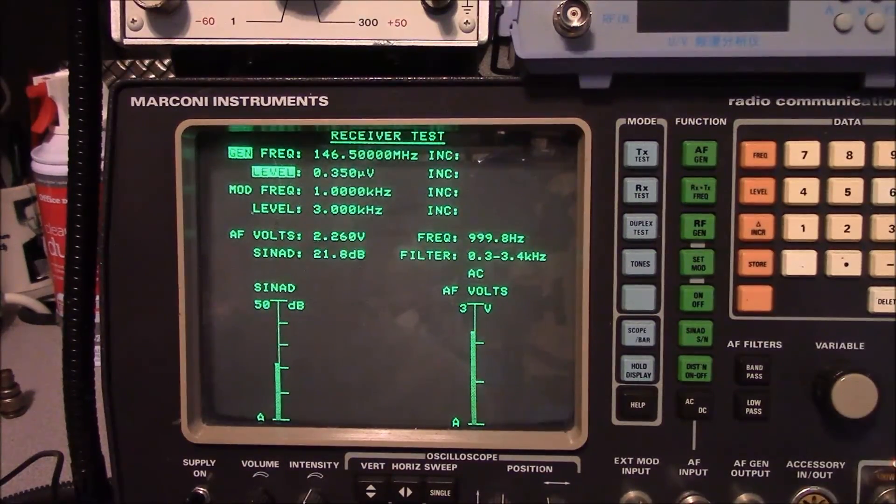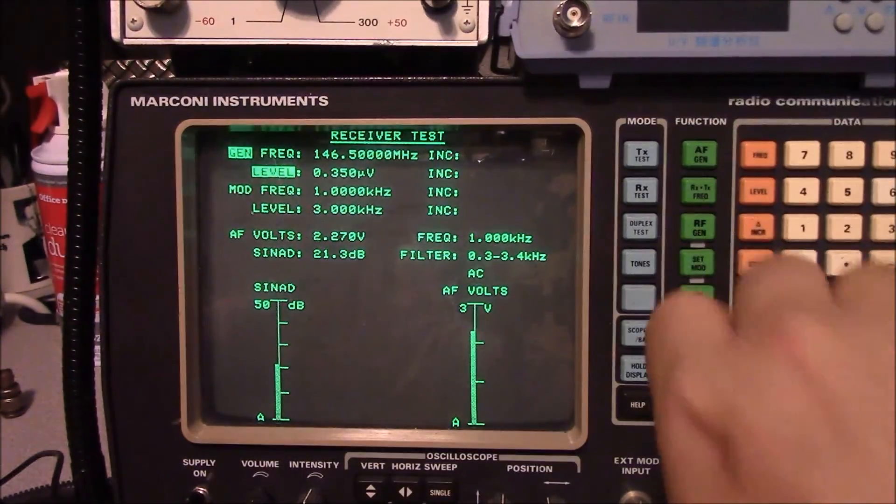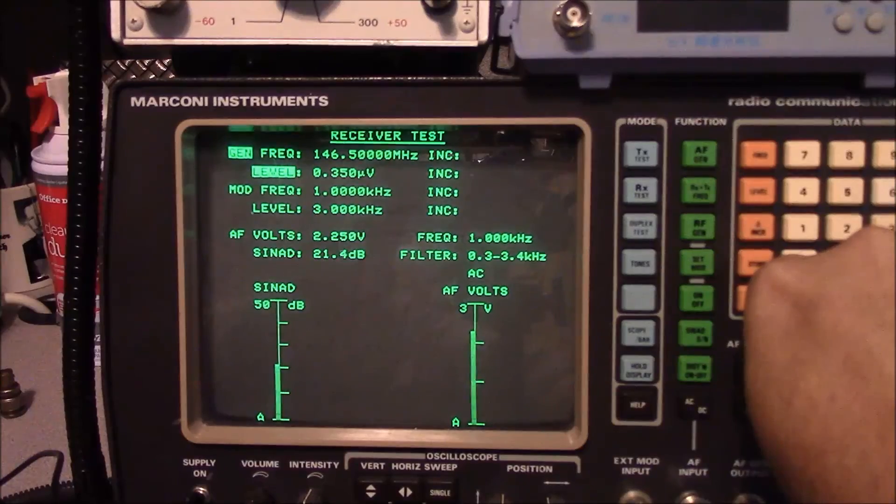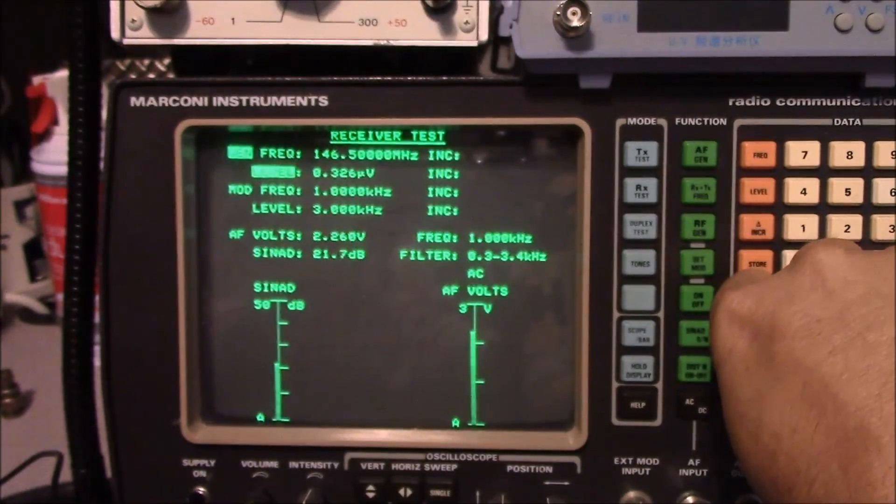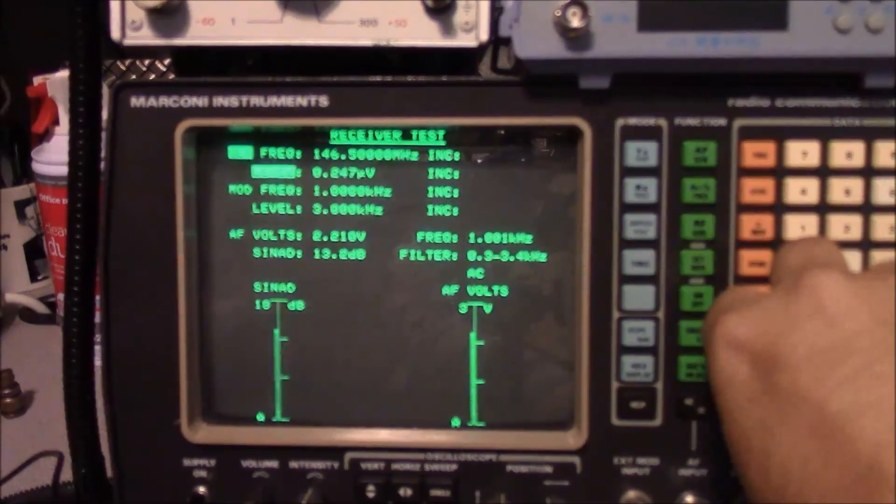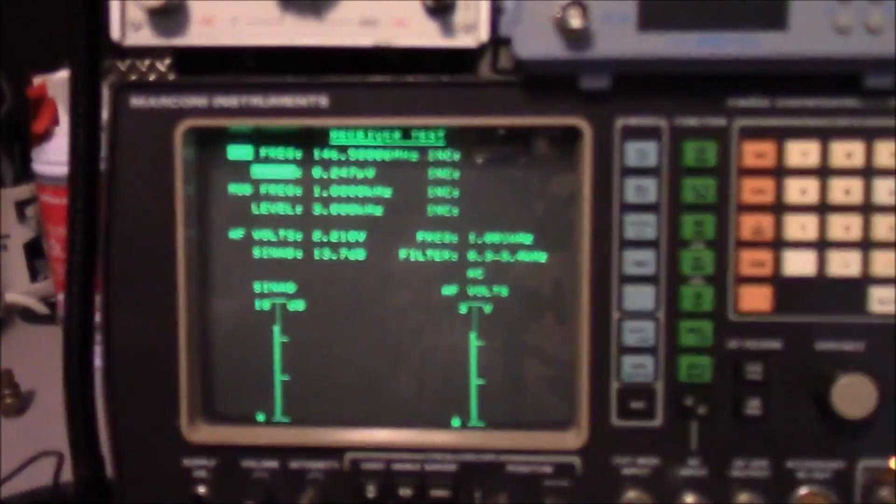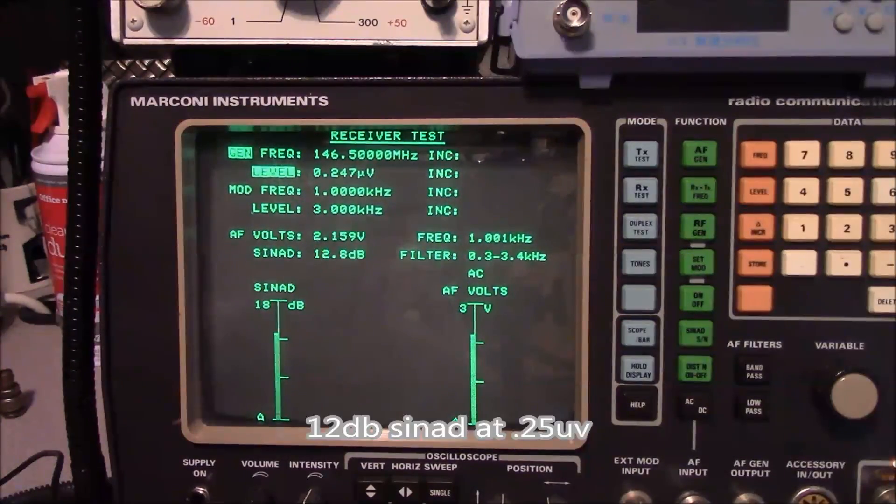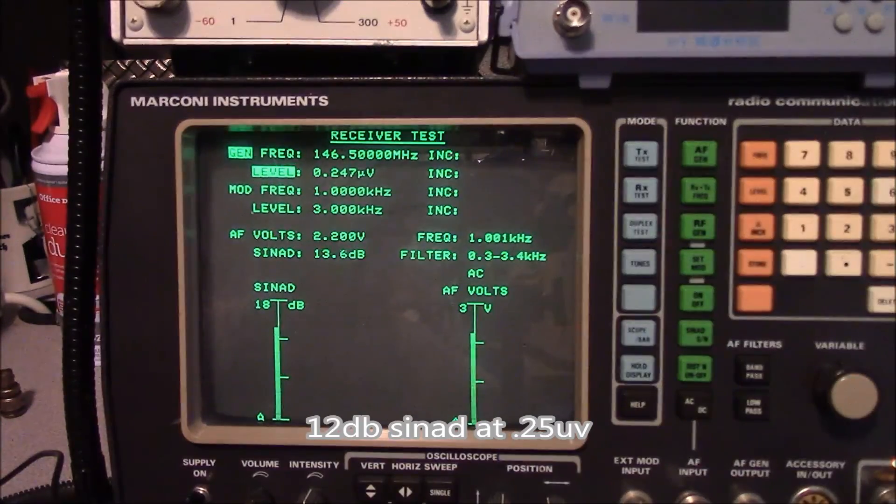The specification calls for 12 dB of SINAD at 0.35 microvolts. And as you can see here, at 0.35 microvolts, we are at 20 dB of SINAD. And as we turn it down here, we'll get it down to 12. So, we're pretty close to 12 right there. And we're at about 0.25 microvolts of sensitivity. So, that's good.